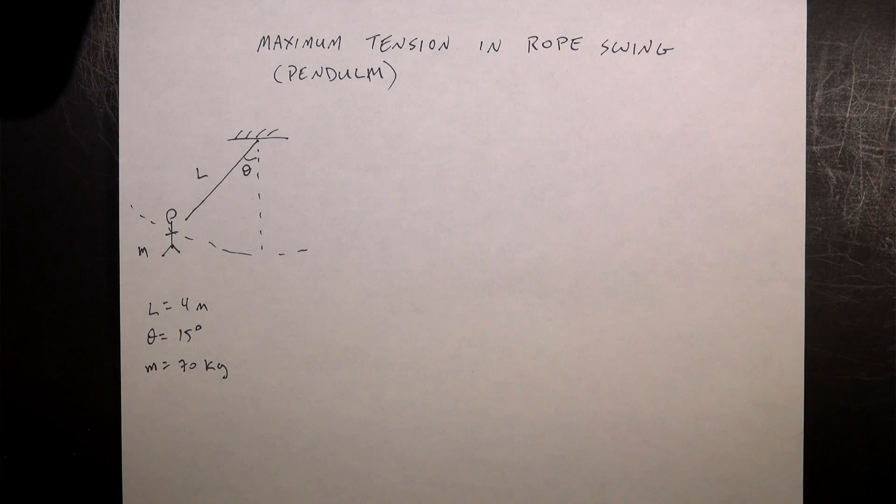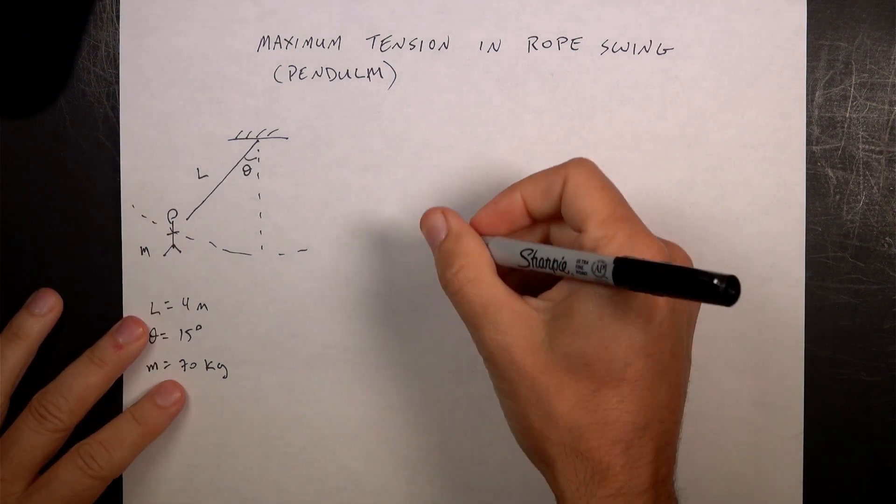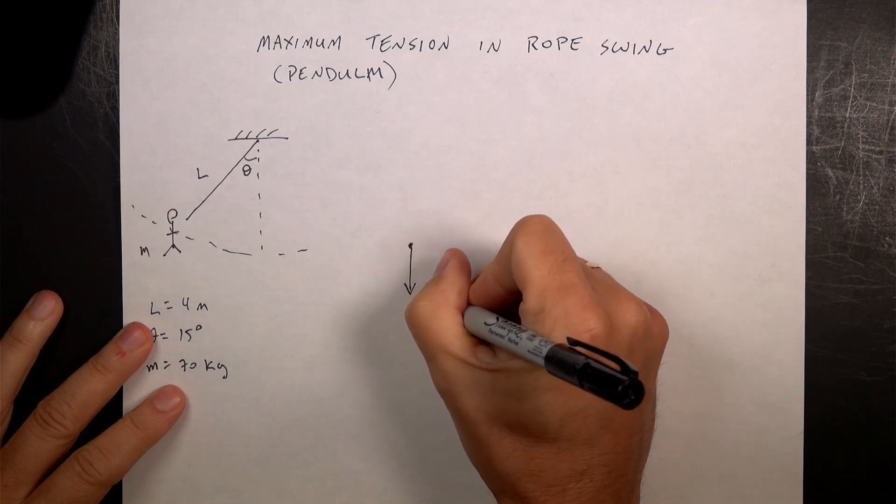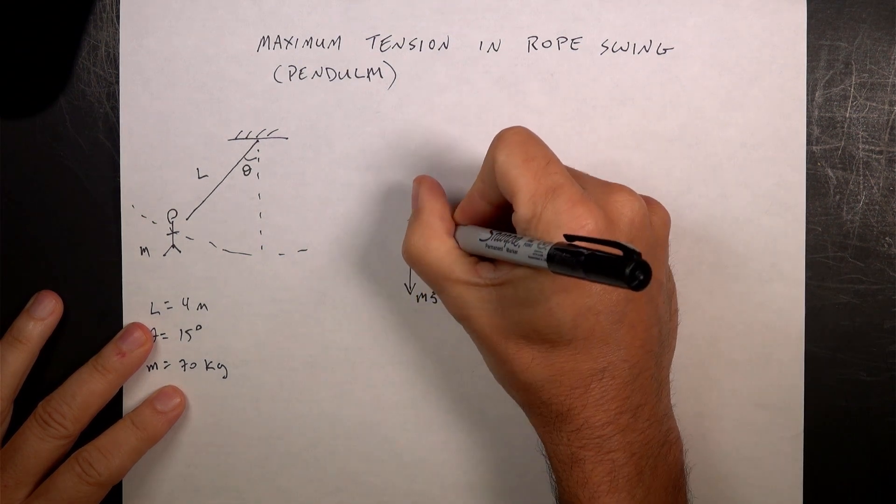So where is the maximum tension in the string first? Why do I like this? I like this because this uses forces and energy. Let's draw a force diagram right here for the person. So we have the person, we have the downward gravitational force, and then we have the tension in the string.